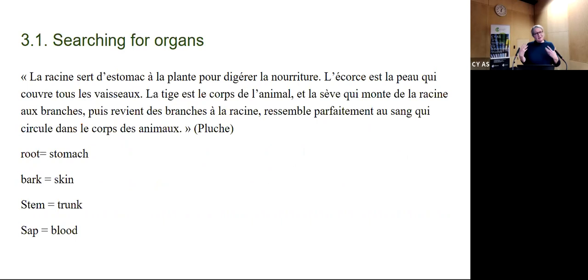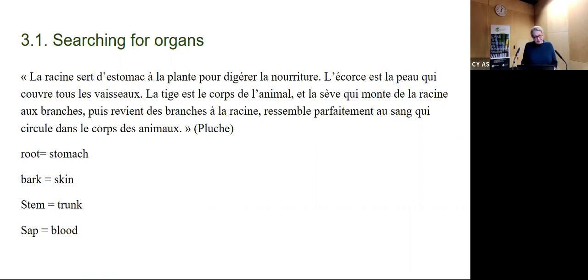One can see how the analogy with animals produces many sub-analogies. Pluche asks: if a plant is like an animal, where is the stomach? Where is the skin? Where is the heart? He answers: the root serves as the stomach to digest nourishment; the bark is the skin covering all the vessels; the stem is the body of the animal; and the sap that rises from the root to the branches and returns from the branches to the root perfectly resembles blood circulating in animal bodies. But is it really that easy?